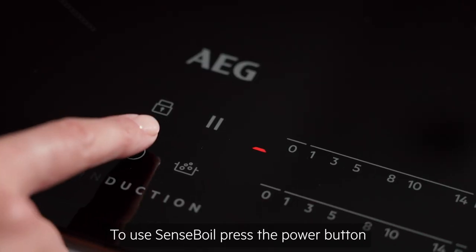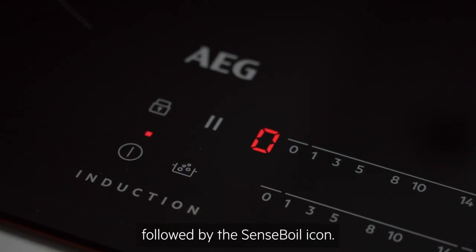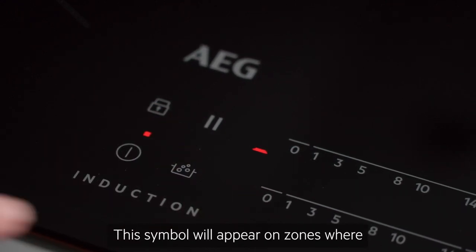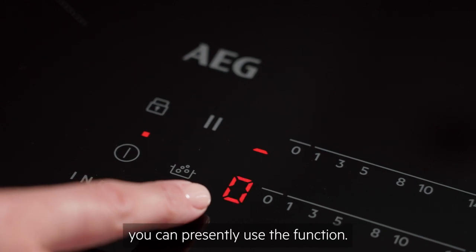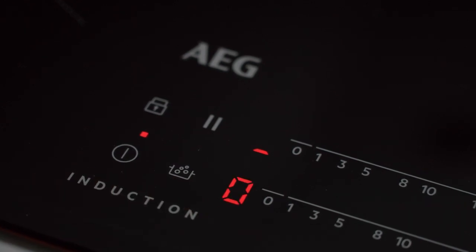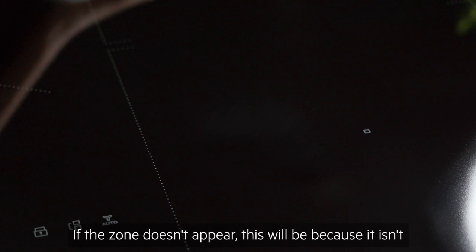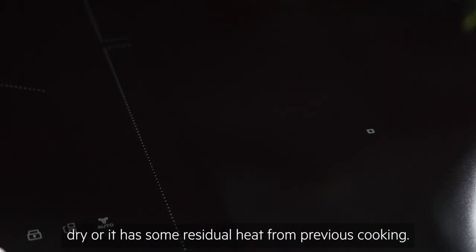To use Senseboil, press the power button followed by the Senseboil icon. This symbol will appear on zones where you can presently use the function. If a zone doesn't appear, this will be because it isn't dry or it has some residual heat from previous cooking.